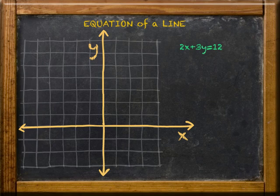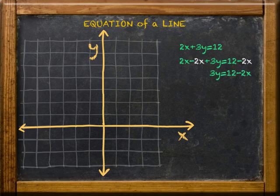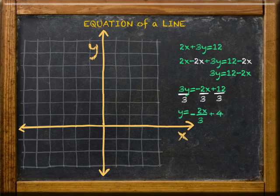Ready? Here we go. Subtract 2x from both sides. Then rewrite the equation. Divide each term by 3. And now the equation is easy to graph.